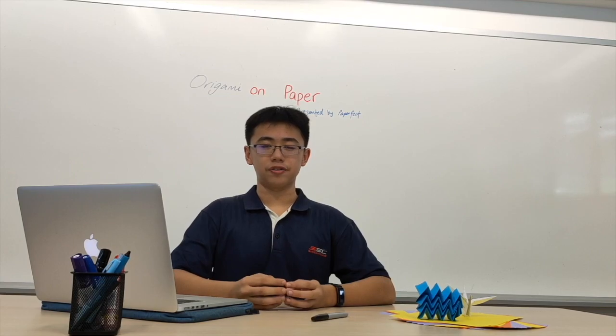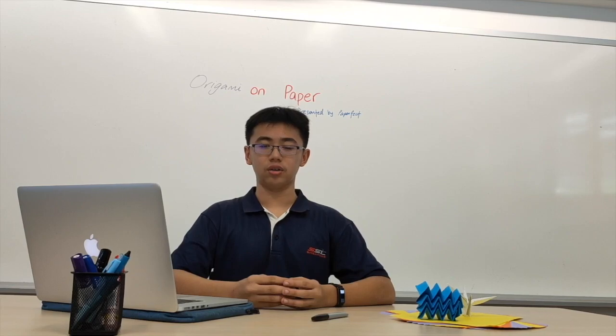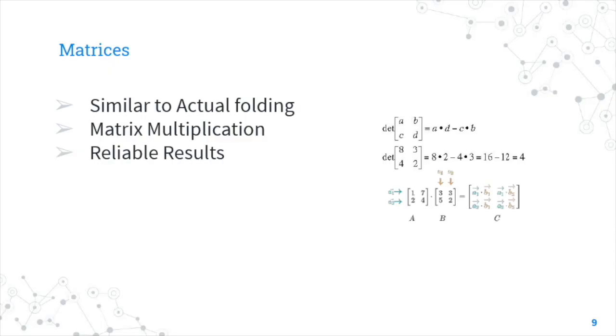Our next method will be algorithmic programming. Based on the methods and findings from the brute force method, we generalized the pattern and use coding to identify combinations for folding large sheets of papers, for instance, a 6×6 or a 12×12, which was much harder to get combinations for. Our last and final method will be matrices. Due to its close similarity to actual folding, we investigated how we could apply matrix multiplication to help obtain more reliable results.